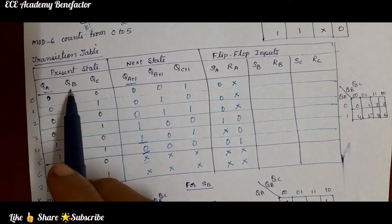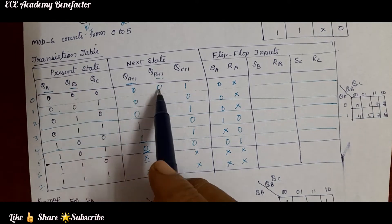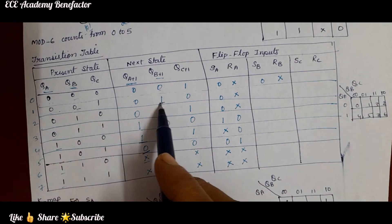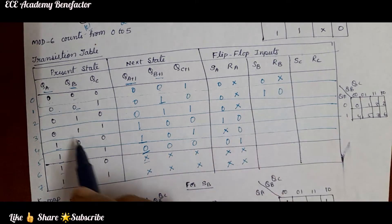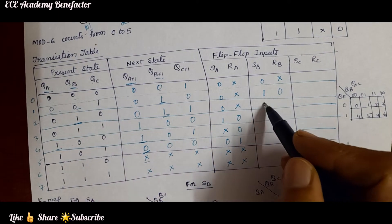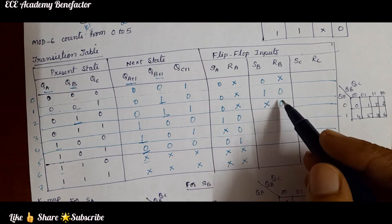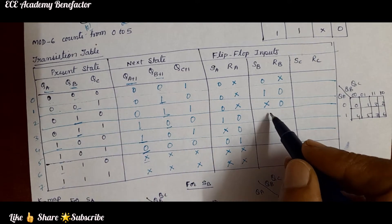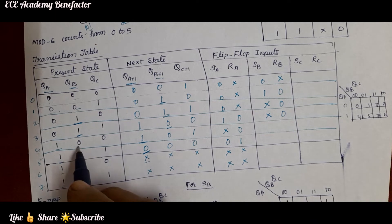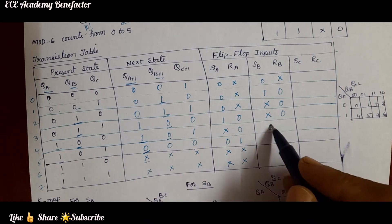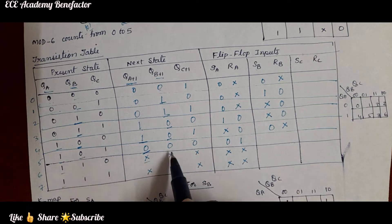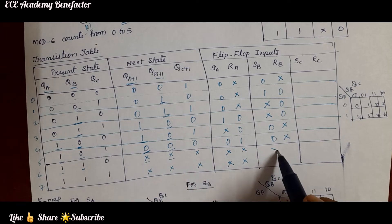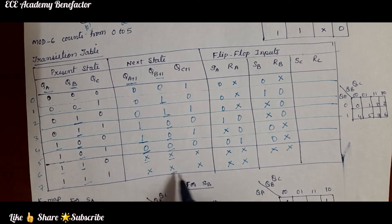Coming to SB and RB, we compare QB with QB+1. For 00 it is 0x; for 01 it is 10; for 11 it is x0; for 10 it is 0x; for 00 again it is 0x; and for the do-not-care rows 6 and 7, it is do not care.